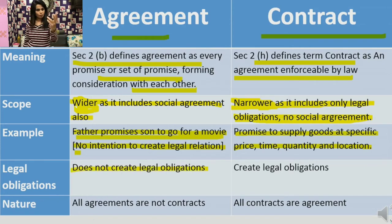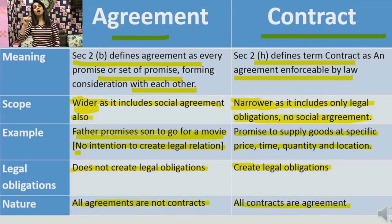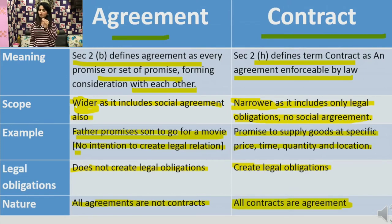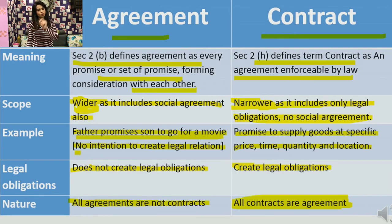Important difference: agreement में कोई legal obligations नहीं होता, and contract के अंदर legal obligation होता है. Fourth difference: all agreements are not contracts — सारे agreements contracts नहीं हो सकते — because social agreements are excluded. But all contracts have to be an agreement. Only the agreements which are enforceable by law are contracts. यहाँ तक हम लोग clear हो गए.